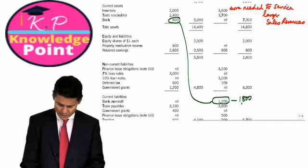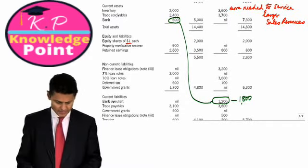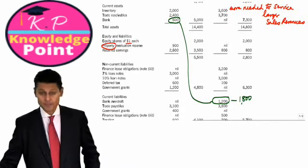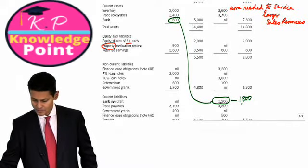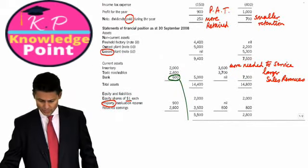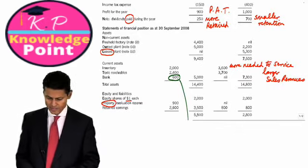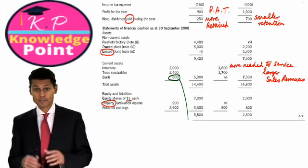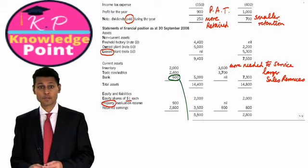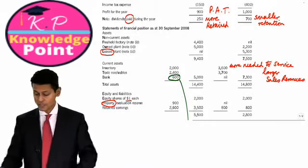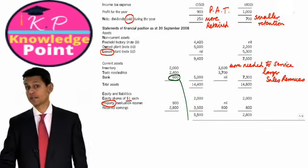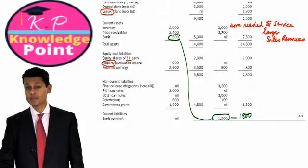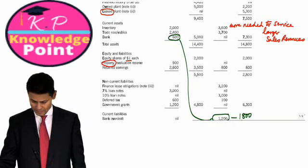Going back, equity shares of $1 each, always underline those $1. Property revaluation reserve. That's interesting. Notice the company on the left, Grappa, actually revalues its property. So I suppose I could say that the freehold factory without the 900 property revaluation would have been 3,500. The revaluation is the move from cost to market value, fair value usually. That's going to make a dramatic difference to the ratios as I'll explain in due course.